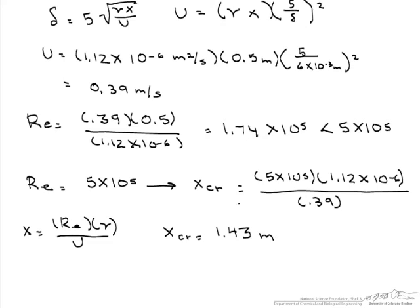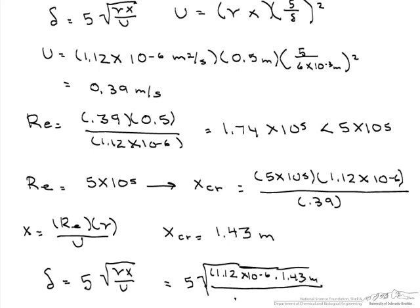What is the boundary layer thickness there? Again, we are going to use this equation, but now our x is going to be 1.43 meters, everything else is going to stay the same. So this is going to be 5 times the square root of 1.12 times 10 to the minus 6 times 1.43 meters divided by, and this is all under the square root of 0.39 meters per second, and we find out that the boundary layer thickness there is 0.01 meters.